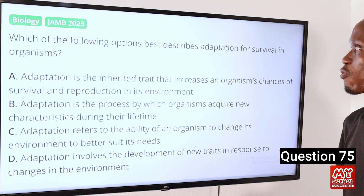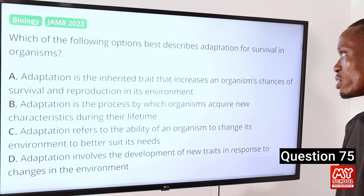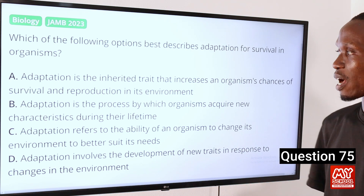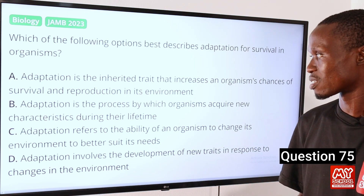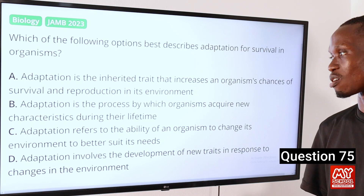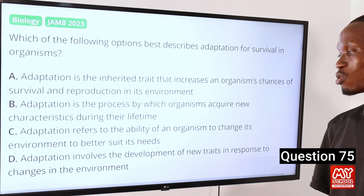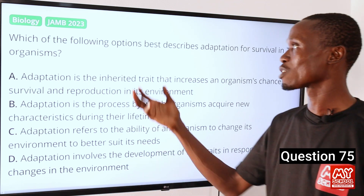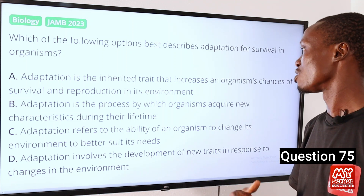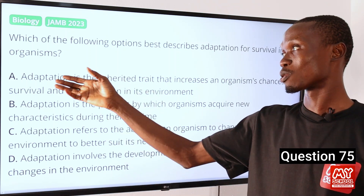Question 75: Which of the following options best describes adaptation for survival in organisms? A: Adaptation is the inherited trait that increases an organism's chances of survival and reproduction in its environment. B: Adaptation is the process by which organisms acquire new characteristics during their lifetime. C: The ability of an organism to change its environment to suit its needs. D: Development of new traits in response to environmental changes. The best option is A — the inherited trait that increases an organism's chances of survival and reproduction in its environment. So option A is the correct option.